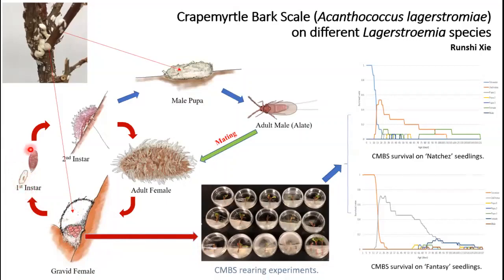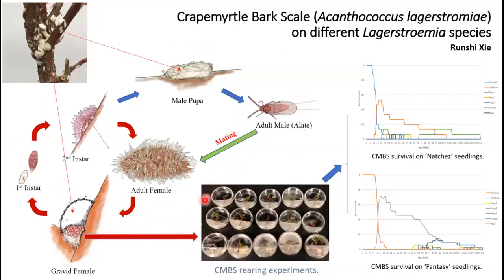I then transferred the newly hatched first instars into small feeding chambers, which consist of agar media and a piece of quakemoto cuttings. These feeding chambers allowed me to document the entire life cycle of the quakemoto bark scale.